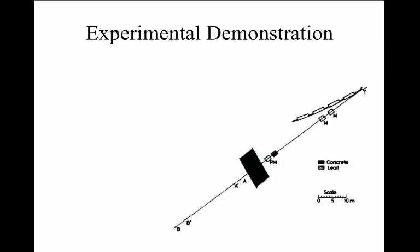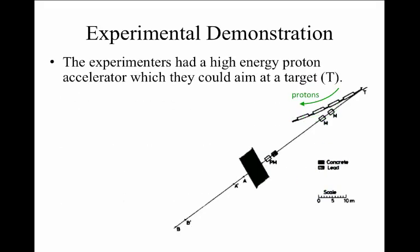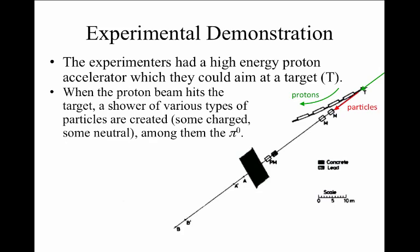The experimental demonstration was done at CERN, which is a particle physics laboratory in Geneva, Switzerland. The experimenters had a high-energy proton accelerator, which they could aim at a target. Protons travel around in a circular orbit in the accelerator until they were steered out and struck a target located at T. When the proton beam hits the target, a shower of various kinds of particles are created. Some of them are electrically charged, some of them are electrically neutral. And although not all particles were the neutral pion, some neutral pions were created in that shower of particles.